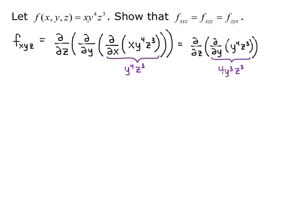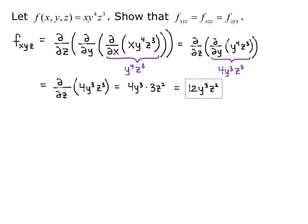Now we take the partial derivative of 4y³z³ with respect to z. We have 4y cubed as our constant multiple, times 3z squared — the derivative of z cubed. So it equals 12y cubed z squared.